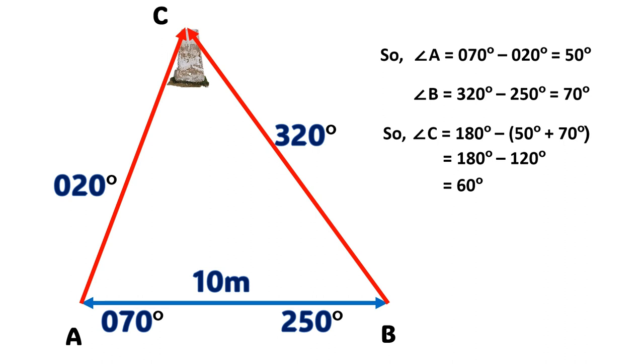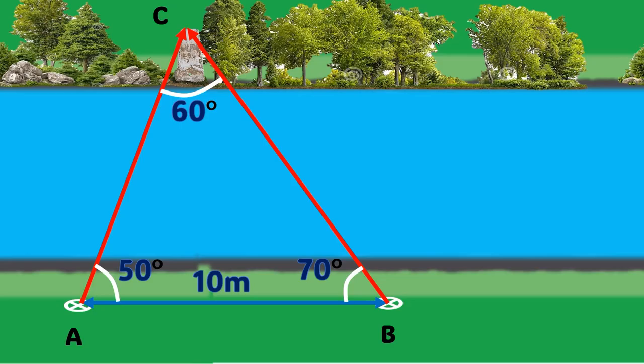Now we have three angles and a side of a triangle. Back to our surveyor. You know that side opposite to angle A will be small a, side opposite to angle B will be small b, and side opposite to angle C will be small c.